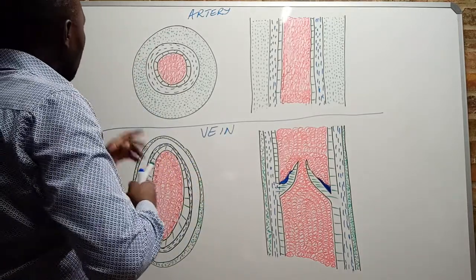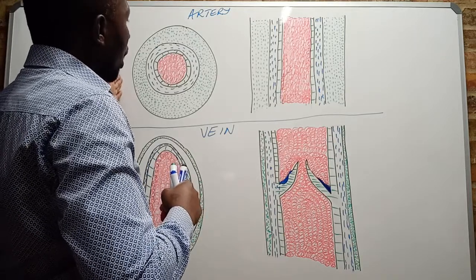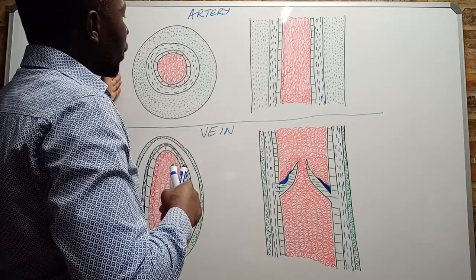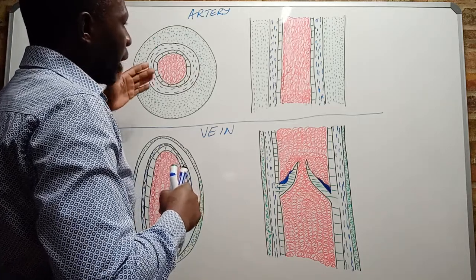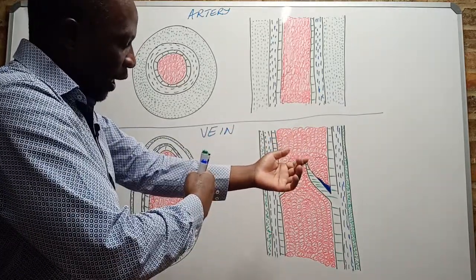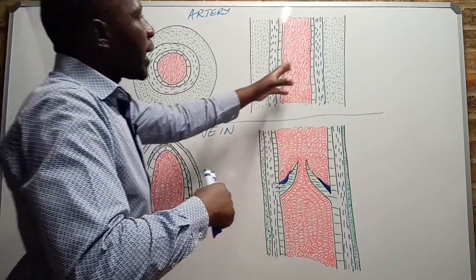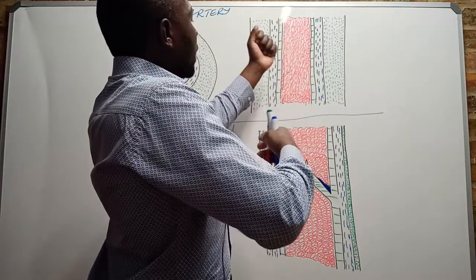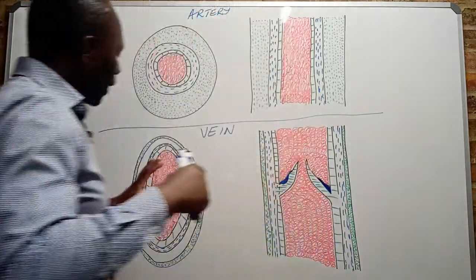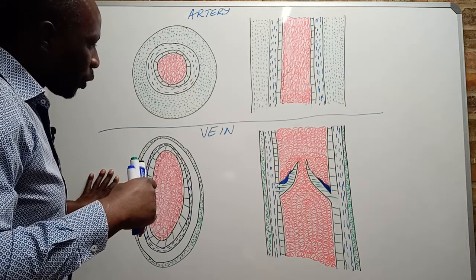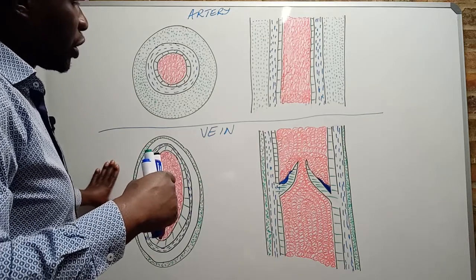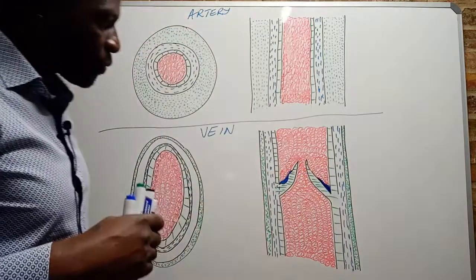The first diagram is a transverse section of an artery — that is, an artery that has been cut across. The second diagram is of an artery again, but this time it is a longitudinal section, cut along. The same applies to the vein: the bottom left diagram is a transverse section, and the other is a longitudinal section.